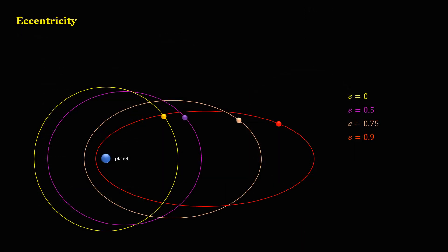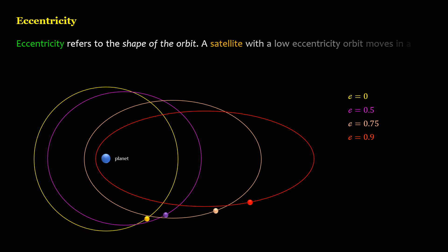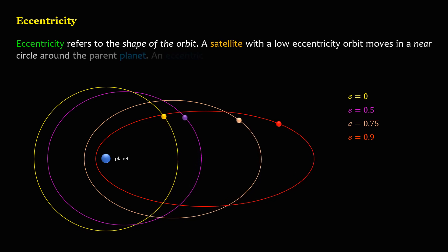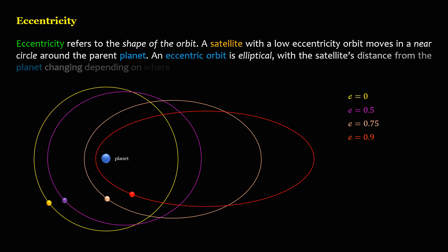Eccentricity refers to the shape of the orbit. A satellite with a low eccentricity orbit moves in a near circle around the parent planet. An eccentric orbit is elliptical, with the satellite's distance from the planet changing depending on where it is in its orbit.